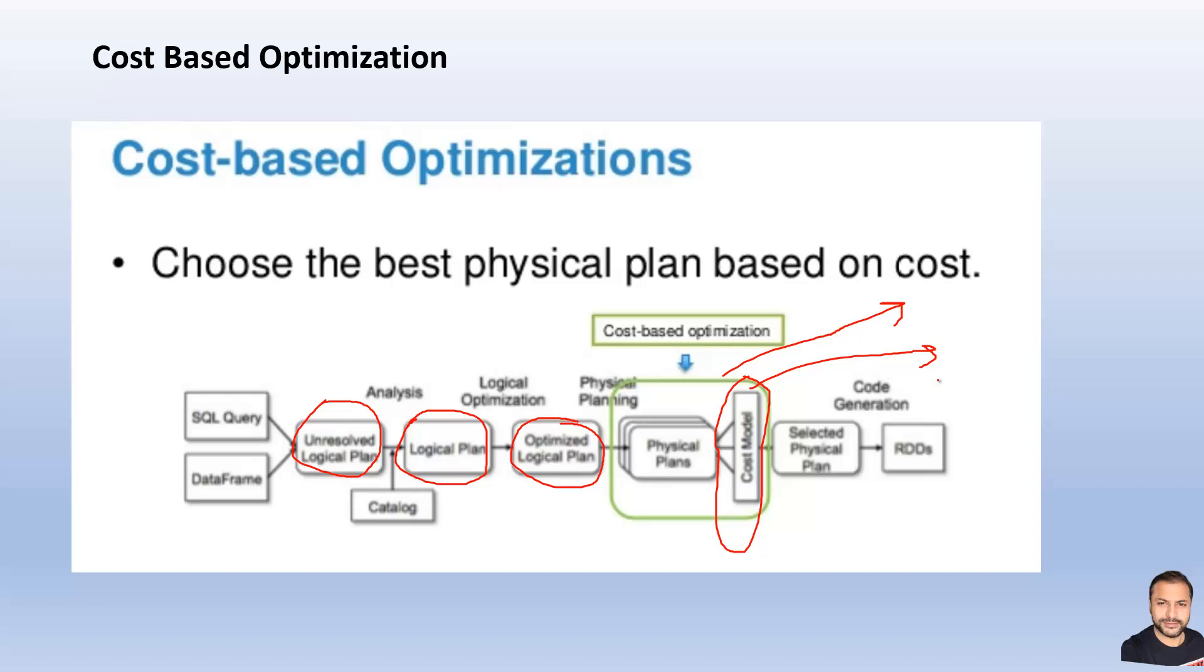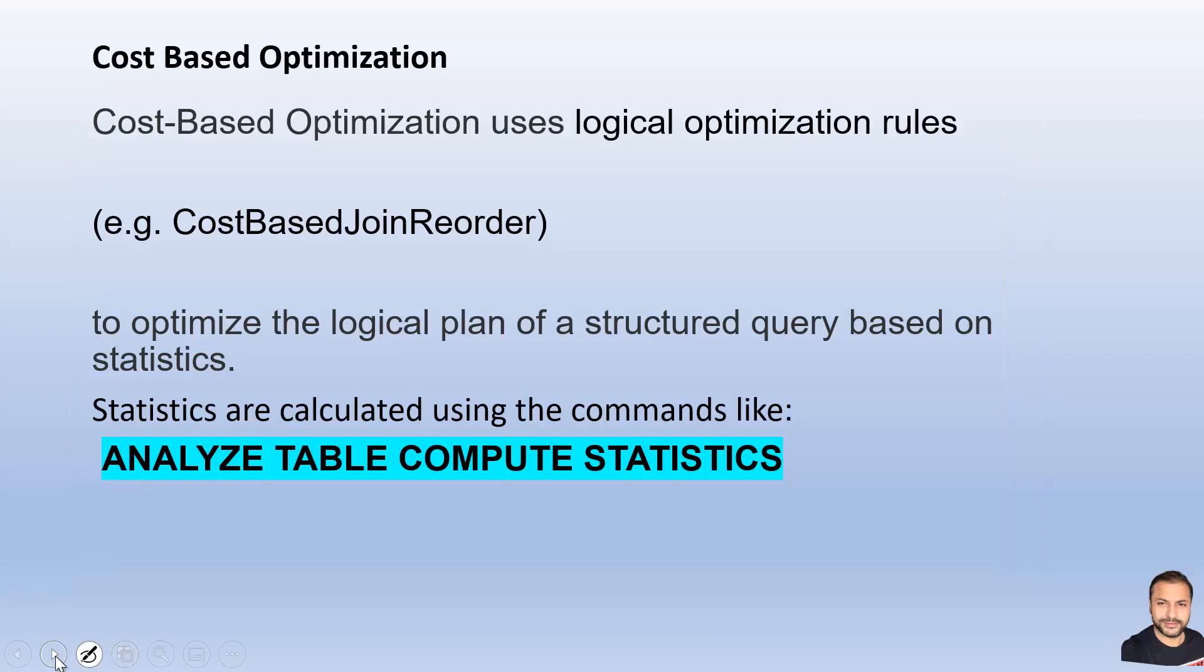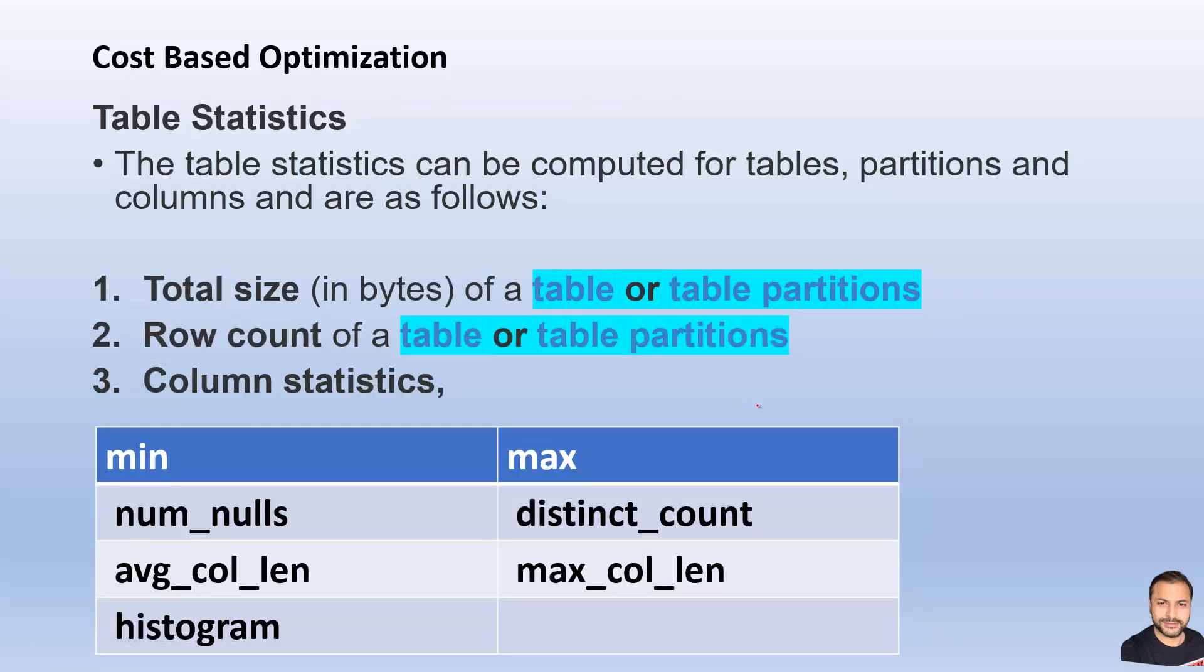The optimized logical plan is actually an input to the cost-based model. One example of the cost-based optimization rule is join reorder based on the statistics to provide an optimized plan. It can do a lot of reordering of the joins. The way we can make the system calculate the statistics is we can use the command ANALYZE TABLE COMPUTE STATISTICS, analyze table or table partition or column to compute the different statistics.